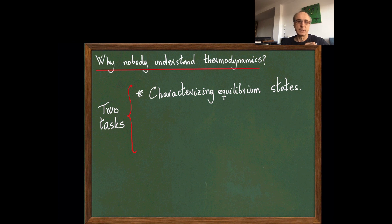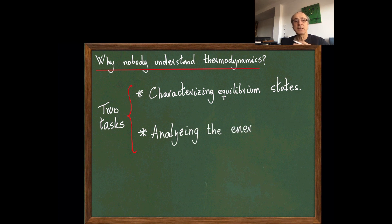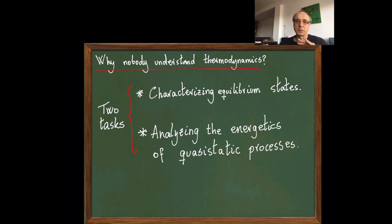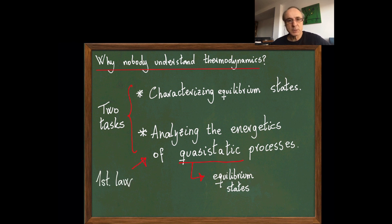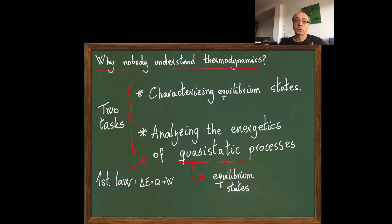The first task is to characterize equilibrium states. The second is the characterization or analysis of the energetics of processes—in particular, in equilibrium thermodynamics, of quasi-static processes where the system is in equilibrium at any stage of the process. If you don't solve the first task, it's difficult to address the second one. So the first one is more basic. The historical approach is based on processes: the first law tells us that the change of energy in a process equals heat plus work, and heat and work are concepts which only make sense when you talk about processes.